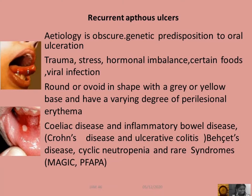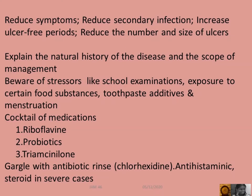Celiac disease and inflammatory bowel disease, Behcet's disease, cyclical neutropenia, and rare syndromes may be associated. The aims of treatment are to reduce the symptoms, prevent secondary infection, increase ulcer-free periods, and reduce the number and size of ulcers.